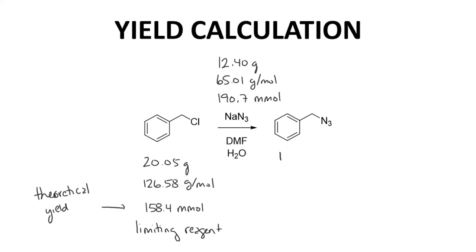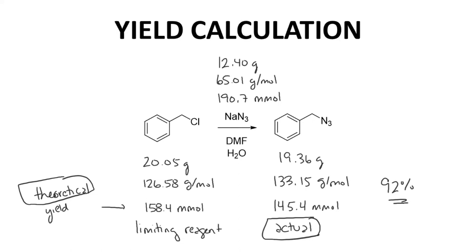For our product, we obtained 19.36 grams. Benzyl azide has a molecular weight of 133.15 grams per mole. So we made 145.4 millimoles of product. This is our actual yield. To calculate our percent yield, we use the actual yield divided by the theoretical yield times 100 to get a 92 percent yield.